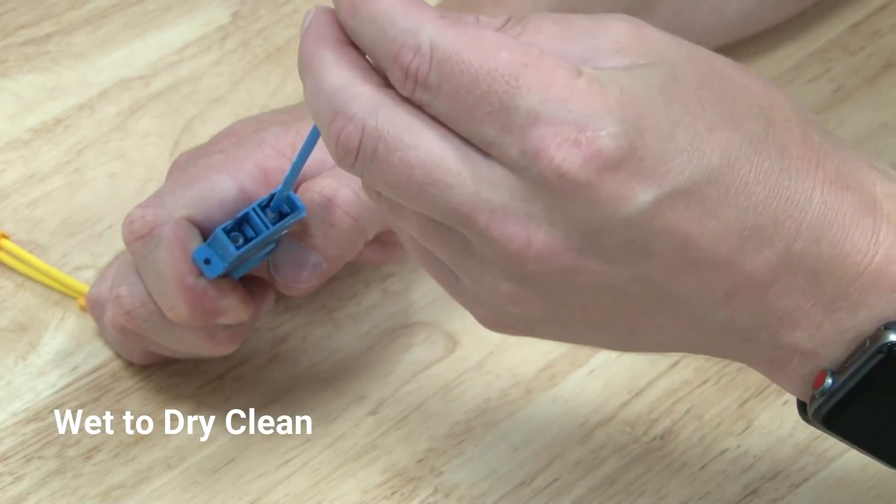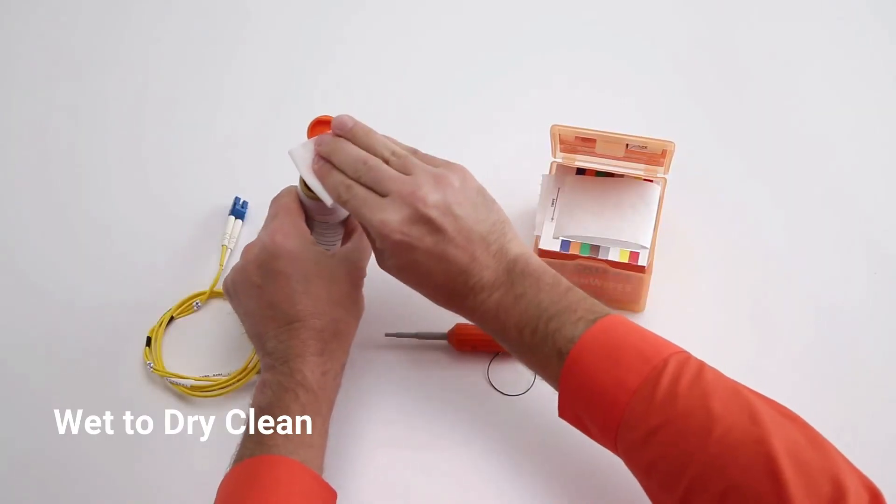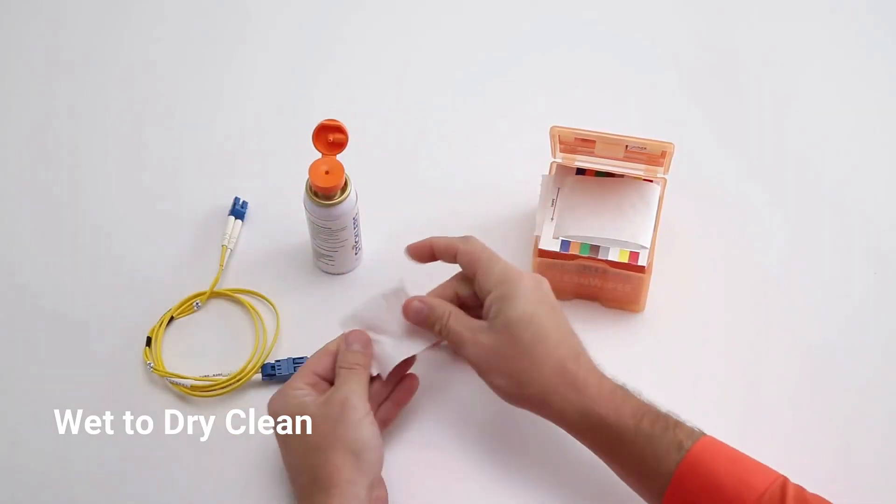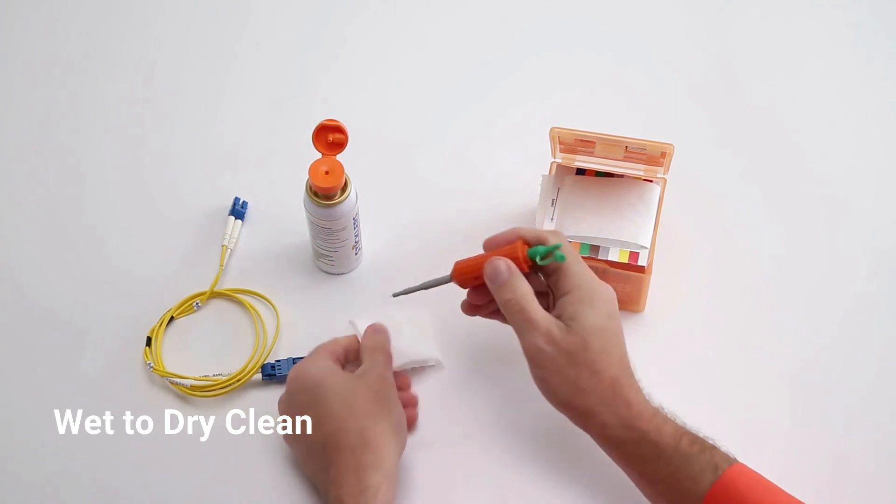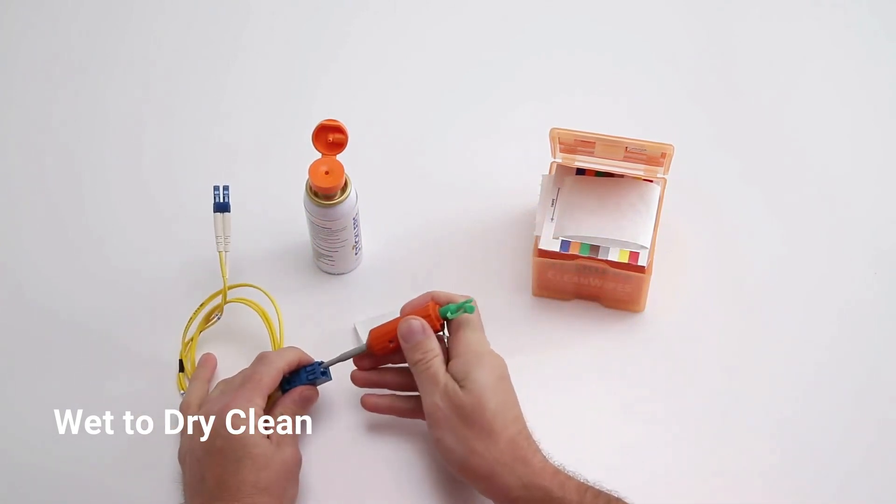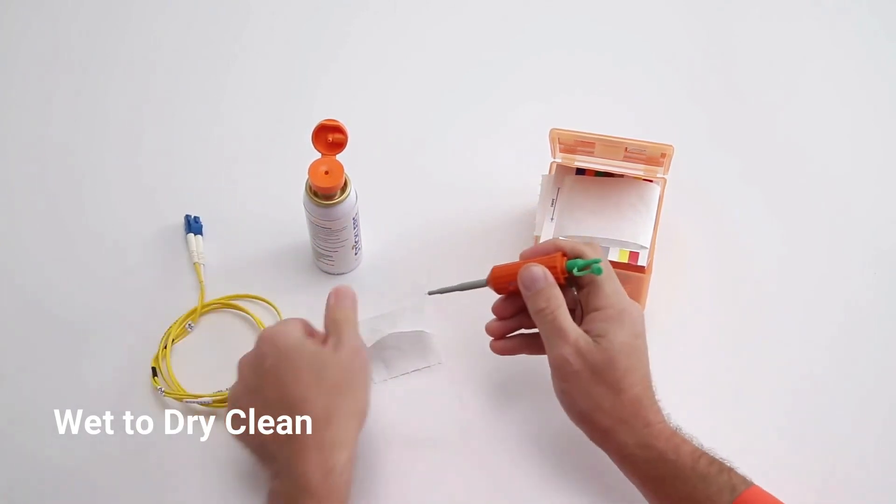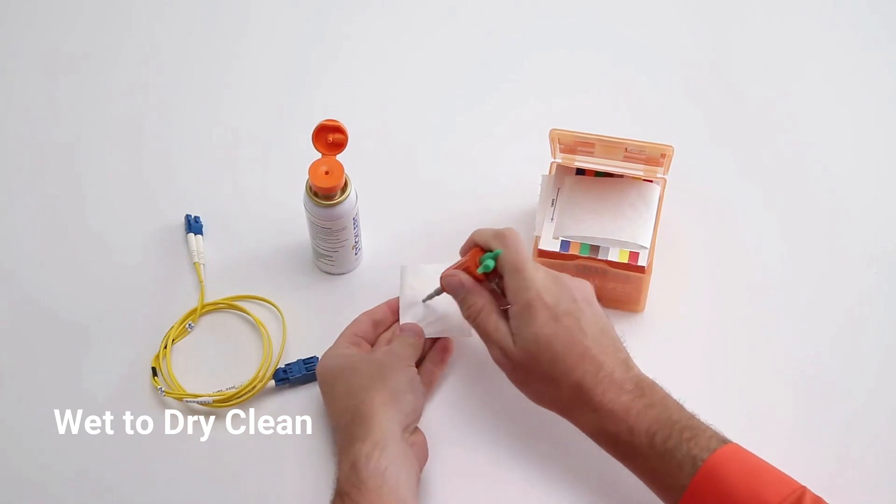When cleaning with a Stickler's Clean Clicker or other mechanical clicker tool, first apply a small dab of fluid to an optical grade wipe. Press the tip of the tool onto the moistened section of wipe, then insert the tool into the end face to clean.